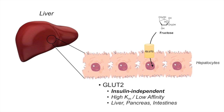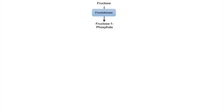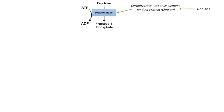Fructose is almost entirely absorbed, processed, and metabolized in the liver. Once fructose is brought into the liver, it is phosphorylated by the enzyme fructokinase. Fructokinase is only present in the liver; this enzyme is irreversible and requires ATP. It is regulated by the transcription factor carbohydrate response element binding protein, and recent research suggests that uric acid will upregulate this transcription factor, thereby upregulating fructokinase.